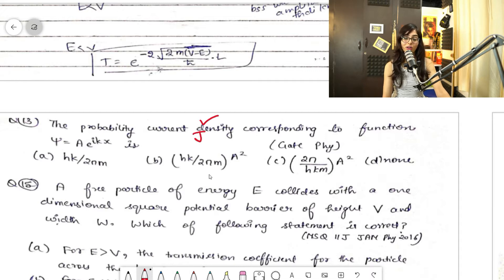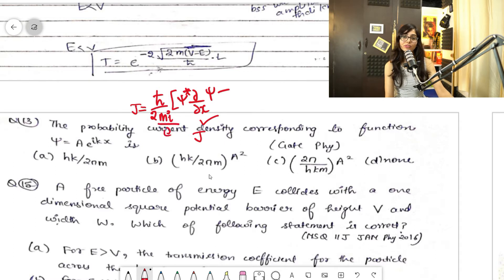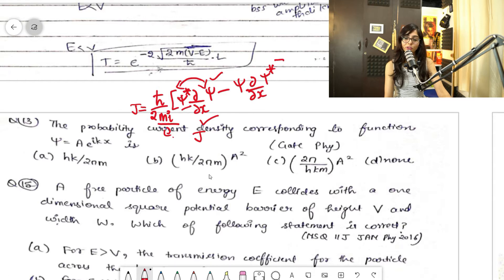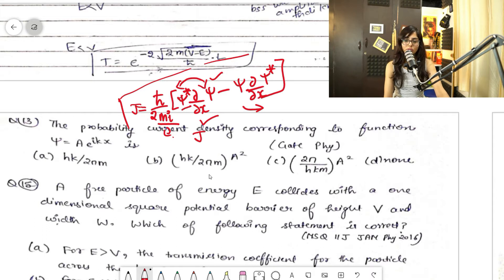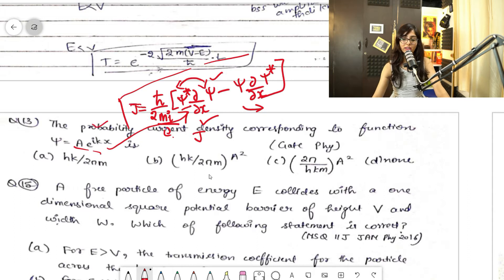Remember the trick I told you: j equals ℏ/(2mi), and it is ψ* ∂/∂x ψ minus ψ ∂/∂x ψ*. Remember it like the 'mi phone' mnemonic — mi, and then ψ* ∂/∂x ψ — then just revert the positions: write ψ ∂/∂x ψ* for the second term. This basic formula can appear very long, but it's very easy if you understand it in mnemonic form.